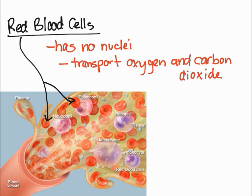Red blood cells don't have nuclei — at least in mammals, red blood cells lack nuclei. They are also really important for the transportation of oxygen as well as carbon dioxide. Red blood cells are made inside your bones, more specifically in the bone marrow. Hemoglobin is the protein in red blood cells that specifically carries the oxygen.